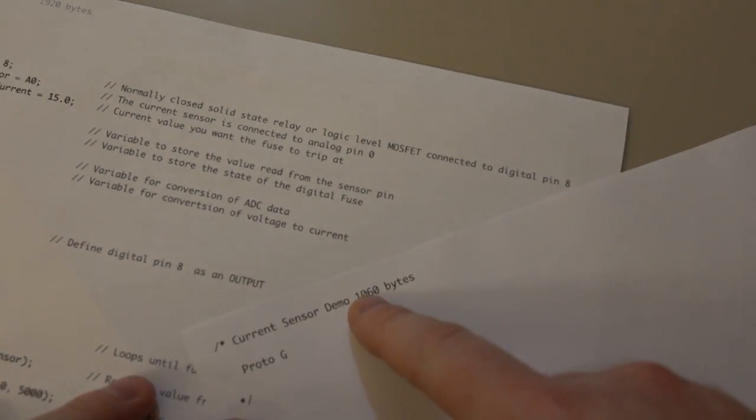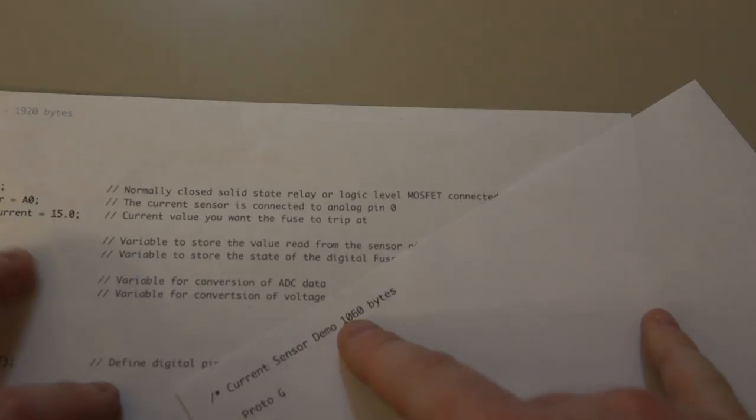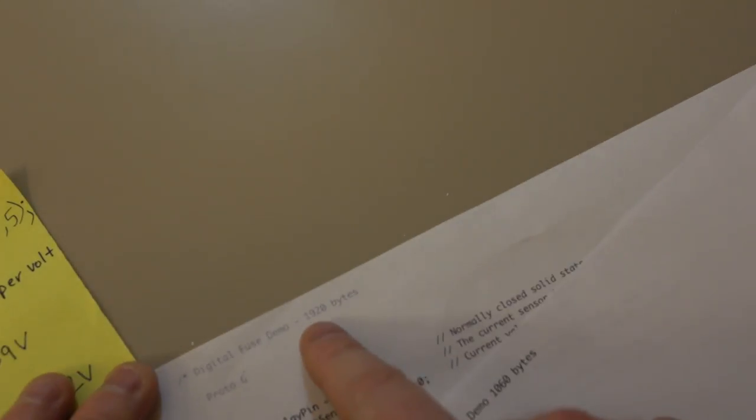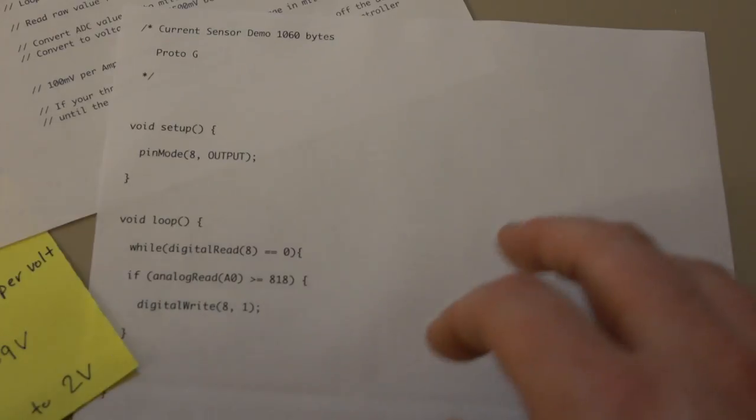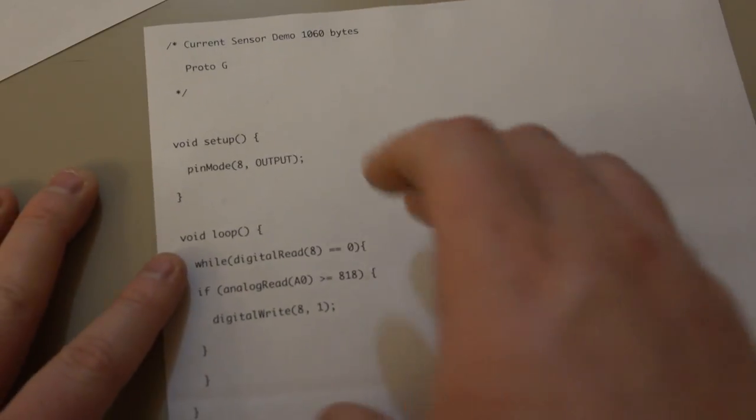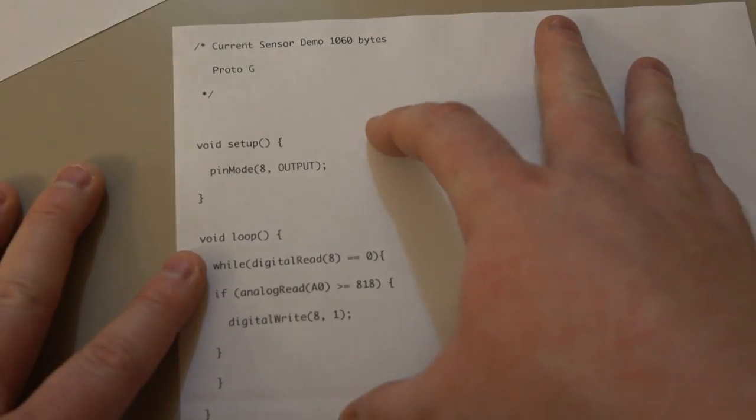So if you were short on storage, you could get away with not using so many variables and different functions. You see the other program here was 1,920 bytes. And this program is 1,060. So it is much smaller. It takes up less memory.